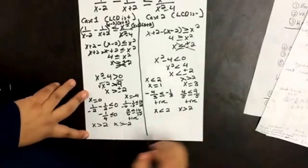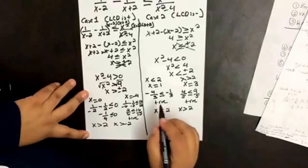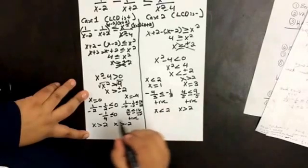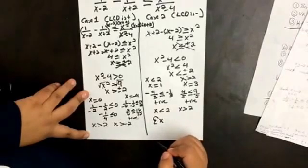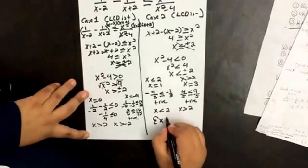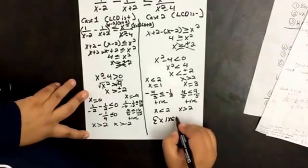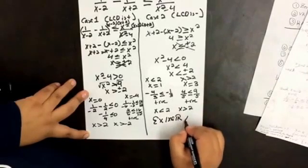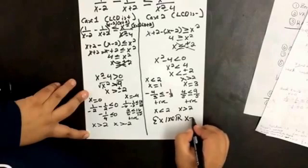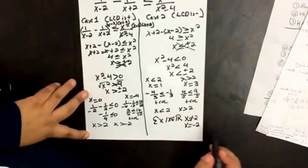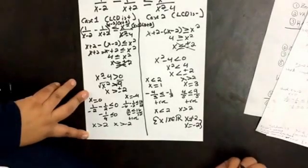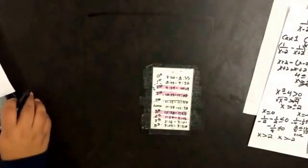For our solution, instead of writing all the separate conditions, we can say that our solution is the set of all x's which are elements of the real numbers, and x cannot be equal to 2 or negative 2. And that's it.